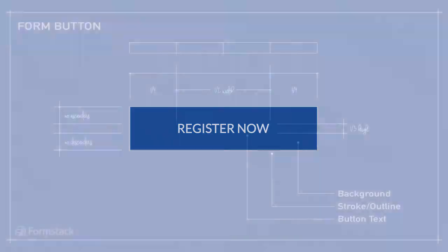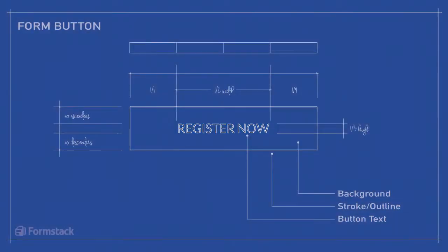Number three: go with all caps. To maintain visual balance inside your button, use all caps for your button text. This creates balance from left to right and also ensures even letter height by eliminating ascenders and descenders in your text.